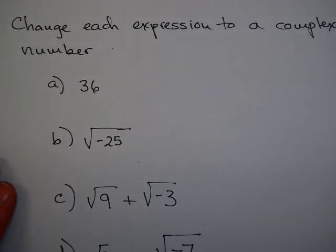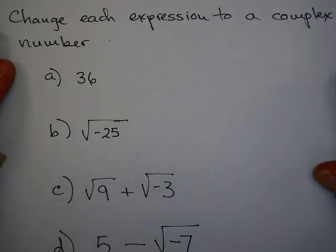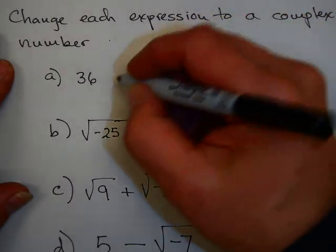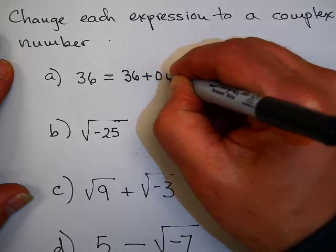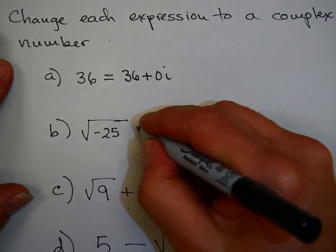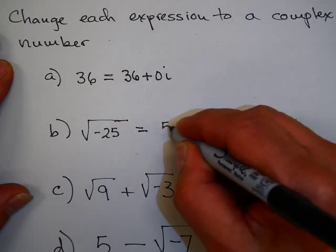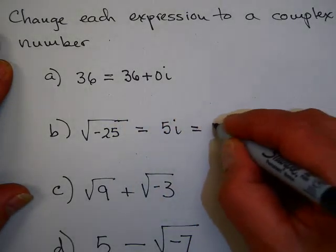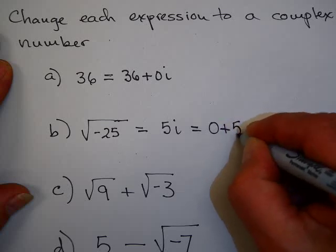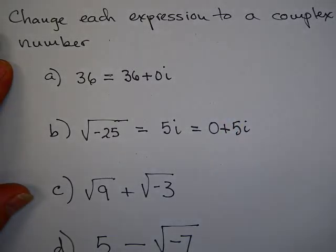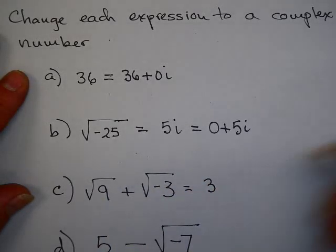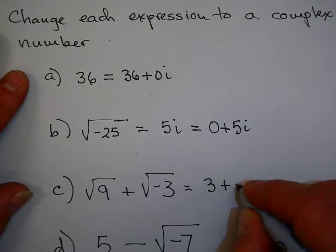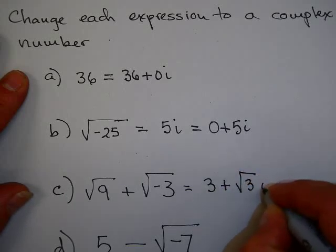With any number system, we try to work with it a little. Here's a problem where I say change the expression to a complex number. 36 is a real number, so I write that as 36 plus 0i. Square root of negative 25: we've seen that the square root of negative 25 is 5i, so it can be written as 0 plus 5i. Square root of 9 plus square root of negative 3: the square root of 9 is 3, and the square root of negative 3 is the square root of 3 times i, giving 3 plus √3 i.